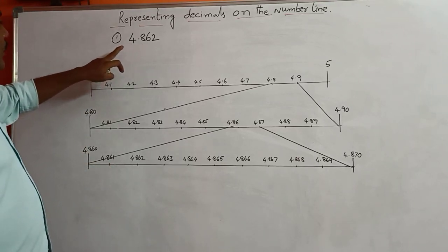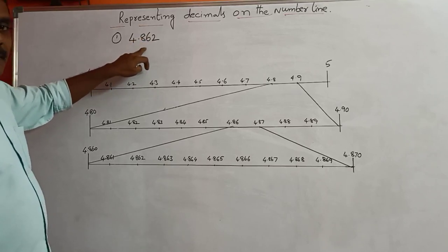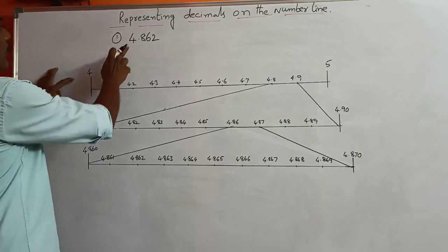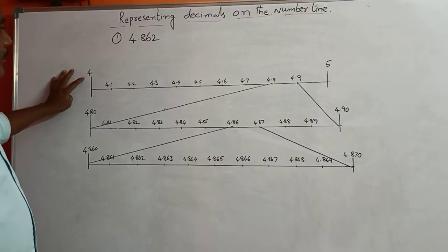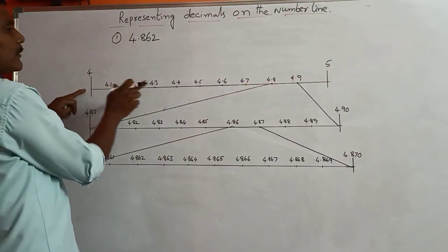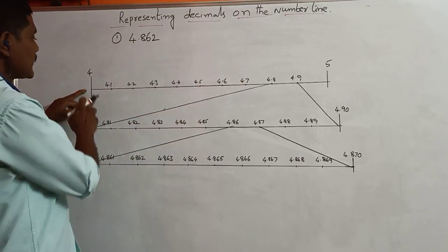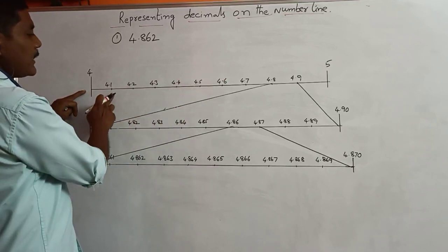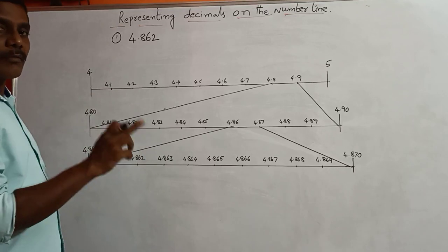See children, 4.862. That means this decimal lies between 4 and 5. If you observe on the scale, from 4 to 5, I divide 1 centimeter into 10 equal parts. On the scale, every part is equal to 1 mm.